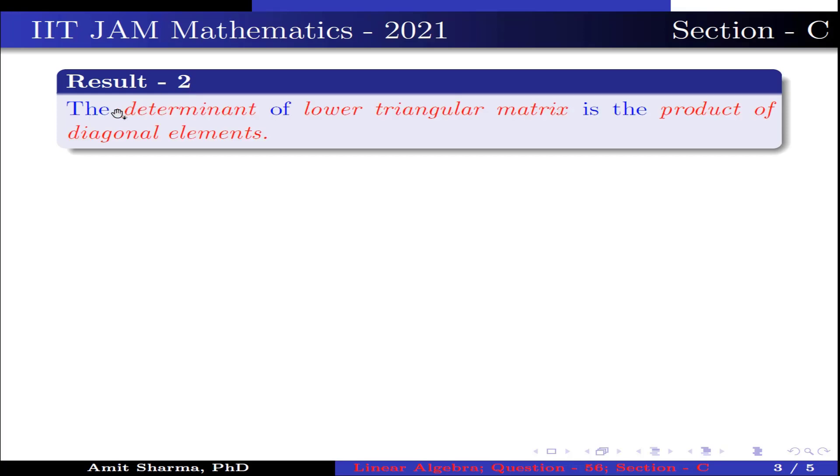Result number 2: The determinant of a lower triangular matrix is the product of diagonal elements.